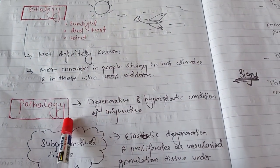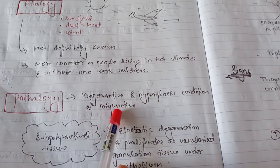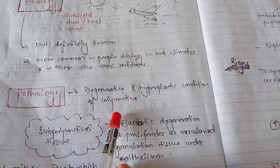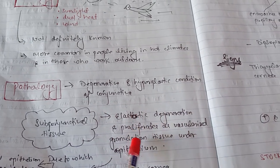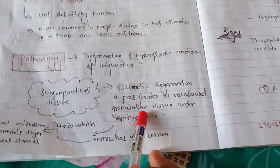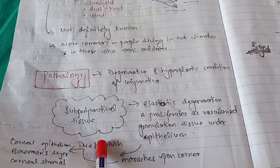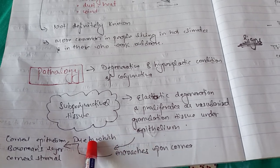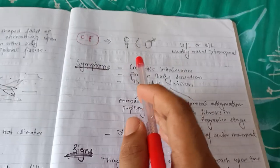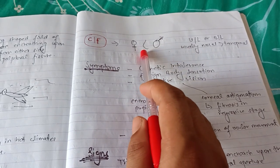Talking about pathology, pterygium is a degenerative and hyperplastic condition of the conjunctiva. Conjunctival tissue undergoes elastotic degeneration and proliferates as vascularized granulation tissue under the epithelium, which encroaches upon the cornea. Bowman's layer and corneal stroma are destroyed.